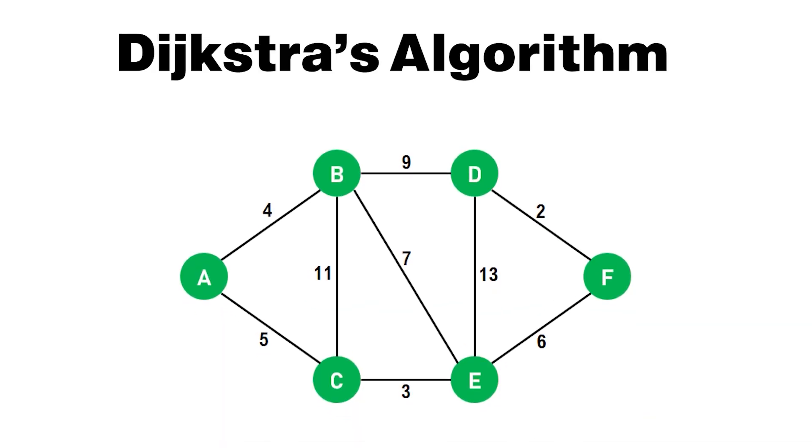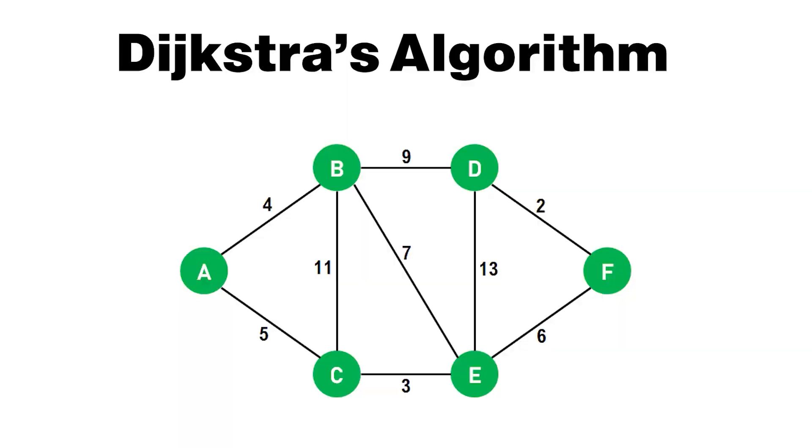In graph traversal, you also learn about different algorithms you can apply. If you want to find the minimum distance between two nodes, there are algorithms like Dijkstra's algorithm. Other important algorithms include Prim's and Kruskal's algorithm, which you'll have to understand and practice — these are very important for software engineering interviews. Once you learn graphs at a basic level, solve different problems on LeetCode related to DFS and BFS, and then learn how to apply these different algorithms.